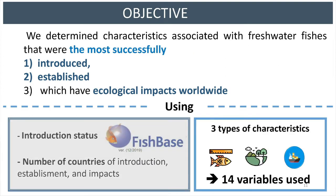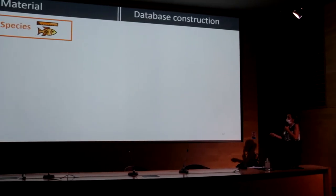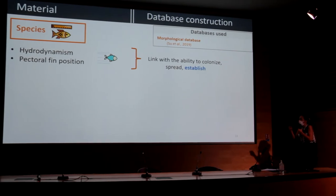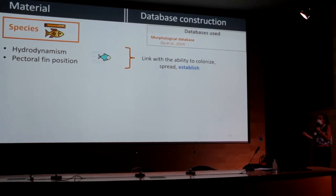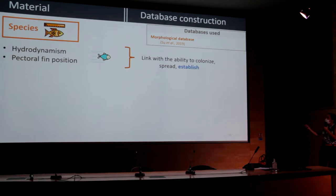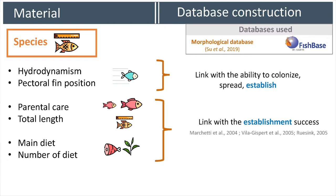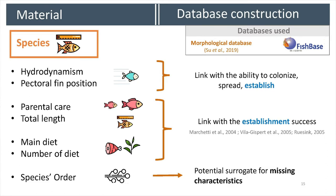In order to use the three types of characteristics, we built a database containing 14 variables. First, we gathered information about species characteristics: we collected variables about the swimming mode and hypothesized that hydrodynamism and pectoral fin position are linked with the ability of species to spread and establish. We also collected parental care, total length, main diet, and number of diets — four variables already linked with establishment success in the literature — and the species order as a potential surrogate for missing characteristics.